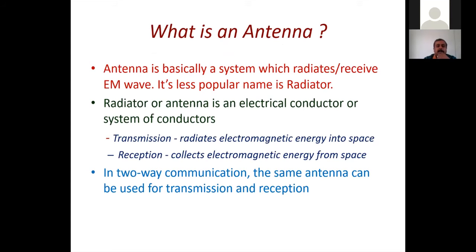An antenna is basically a system that radiates or receives electromagnetic waves. Its less popular name is 'radiator.' It senses electromagnetic waves. In a rough sense, since it senses electromagnetic waves, some people call it a sensor. However, I do not fully agree with that, because an antenna is mainly for broadcasting and radiation purposes. To act as a true sensor, we need a different mechanism.